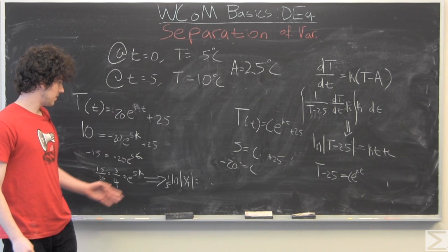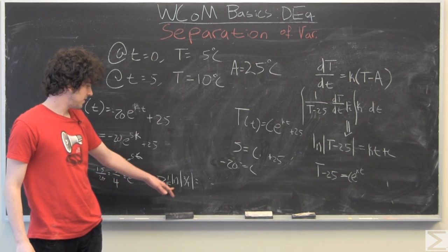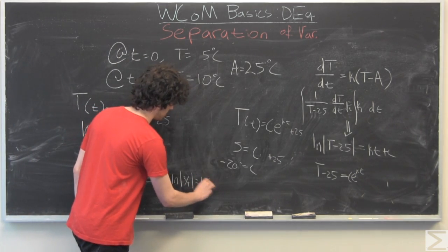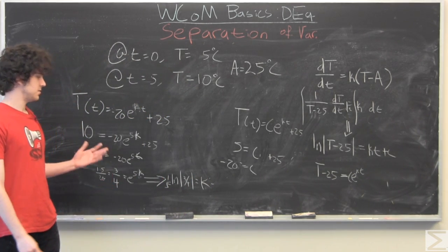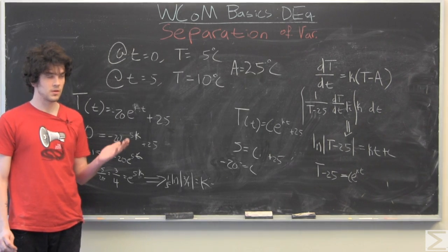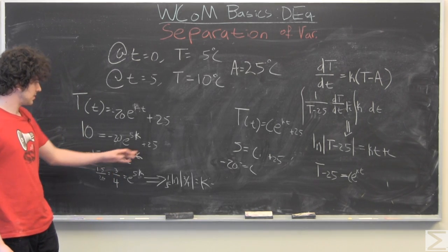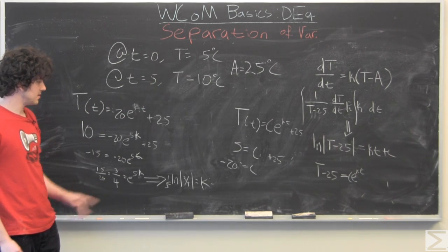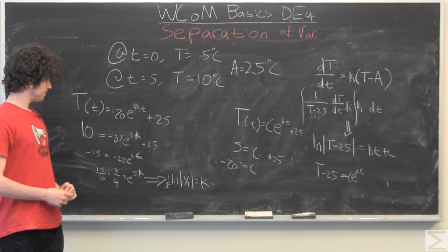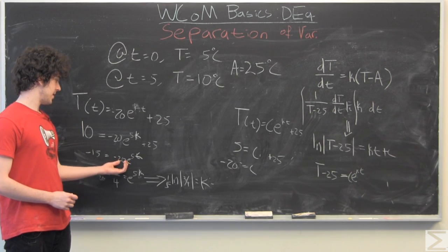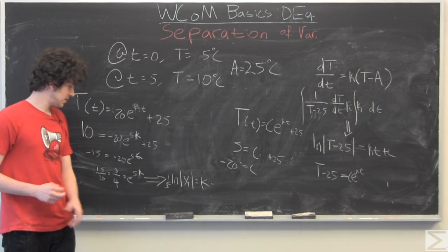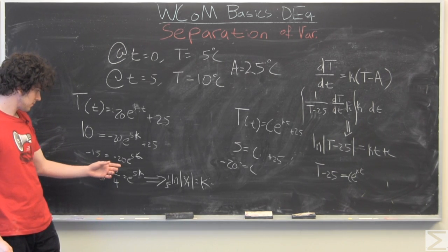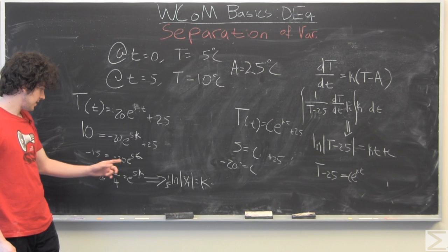So we have one fifth of the natural log of three quarters is equal to K. How I got there was just algebraic manipulation, subtracting 25 from our time at T equals five, dividing by our C that we just found.